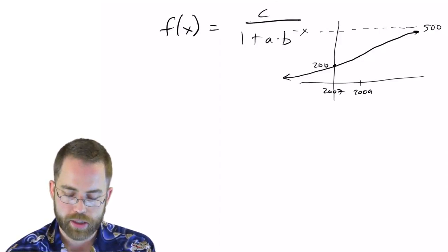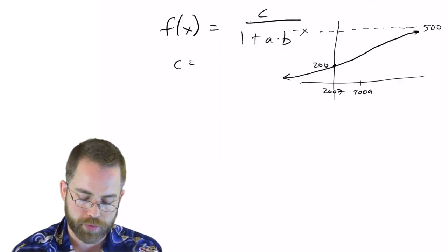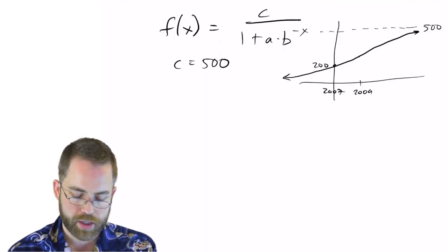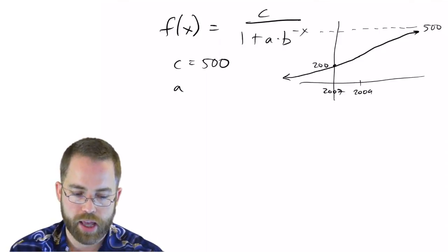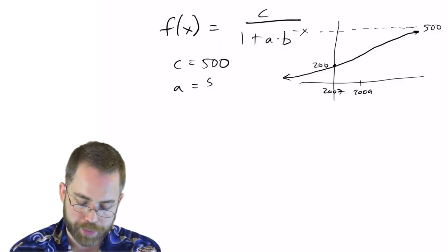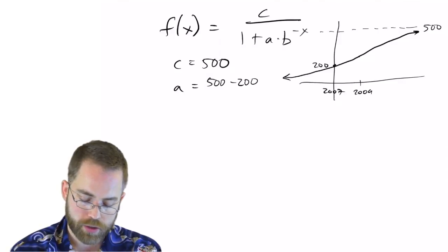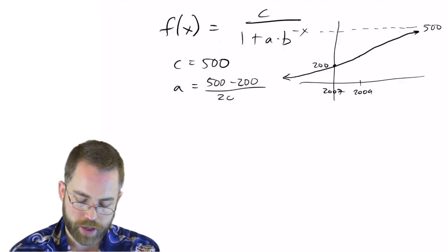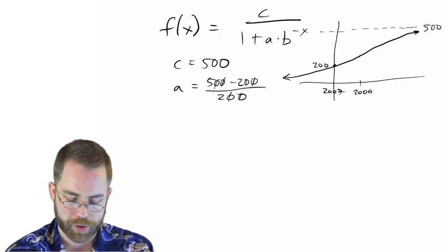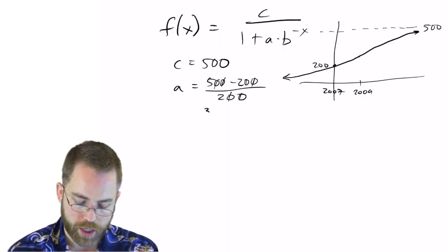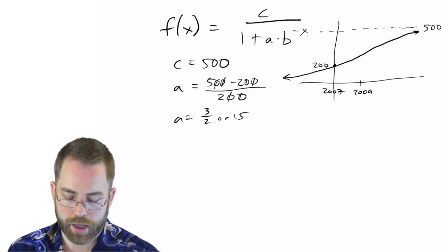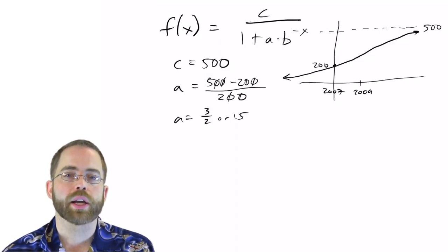So what we've got up here at this height, this maximum, is our carrying capacity. So we found C right off the bat. They gave it to us. That's 500. We've got to try to find out what A is, and A is not the initial value. We wish it was, but it's going to be the carrying capacity minus the initial value divided by the initial value. So all those zeros will cancel, and we'll get 5 minus 2 is 3 divided by 2 is 3 halves, or 1.5. So there's our A, and now it remains for us to find B.